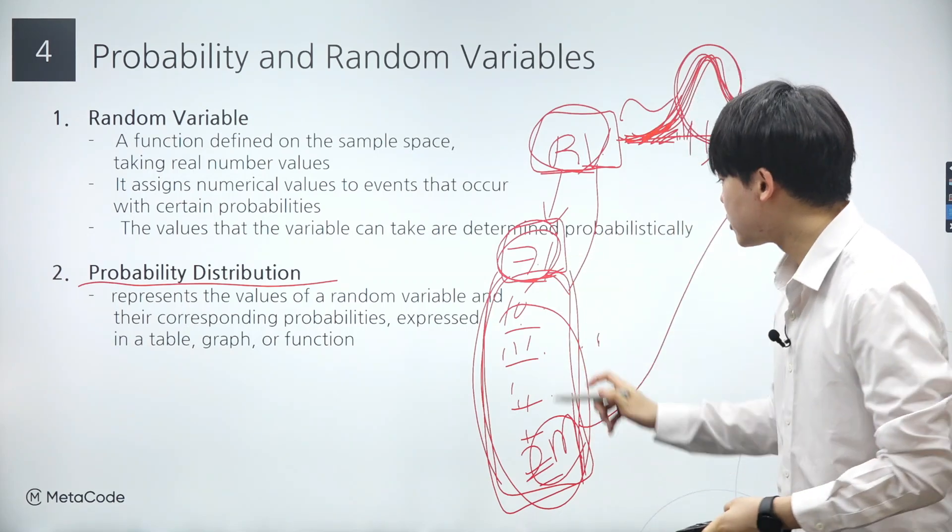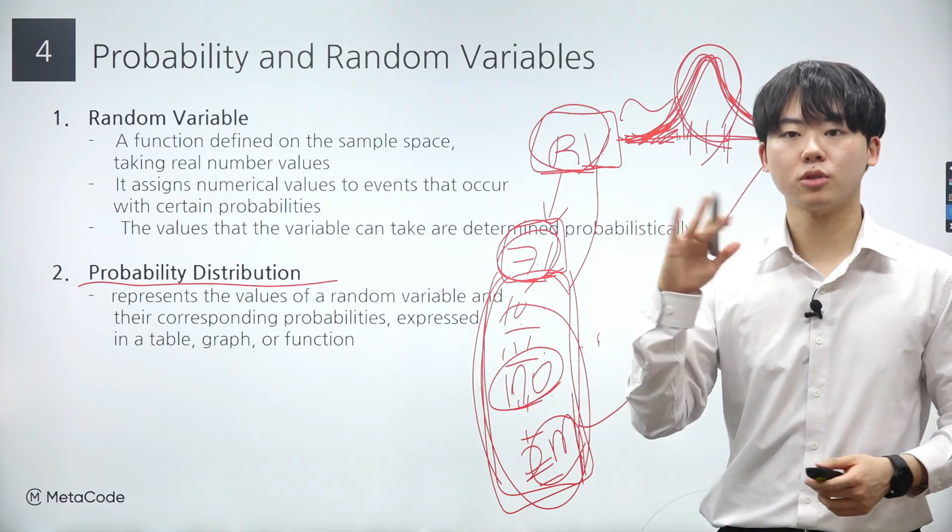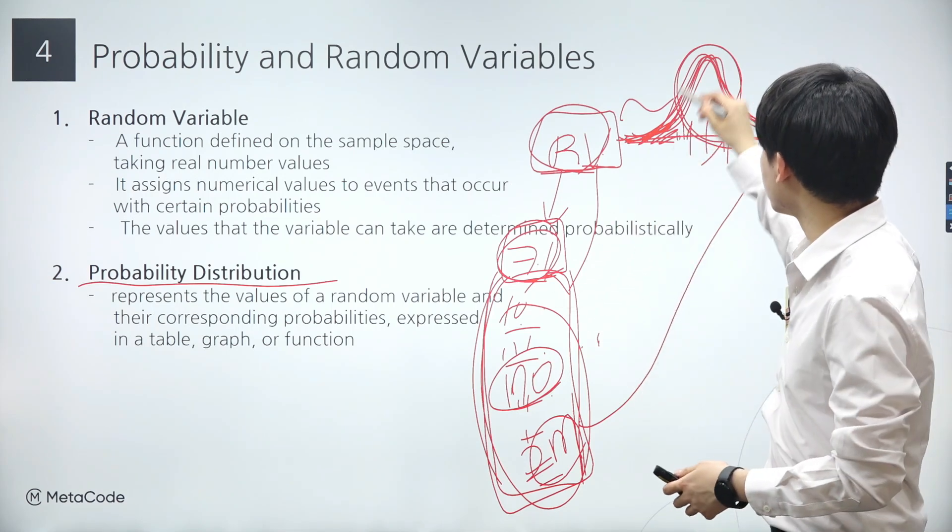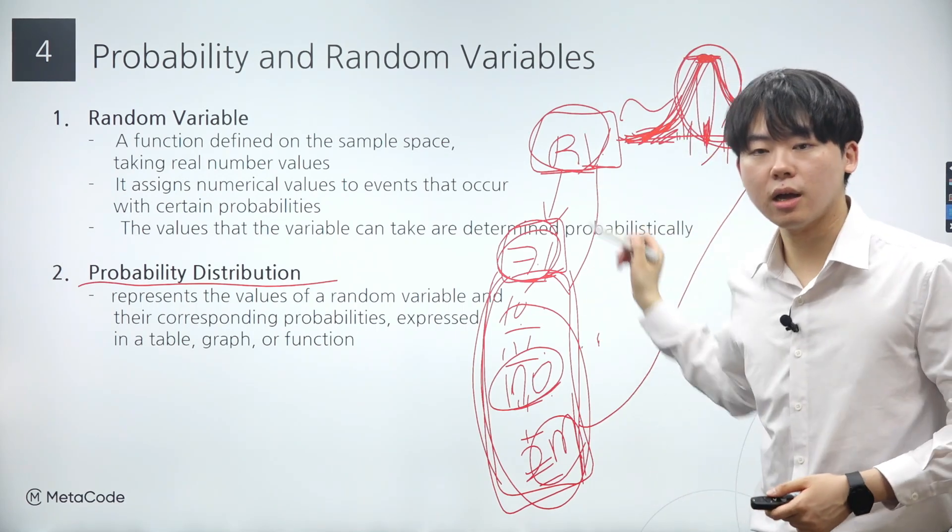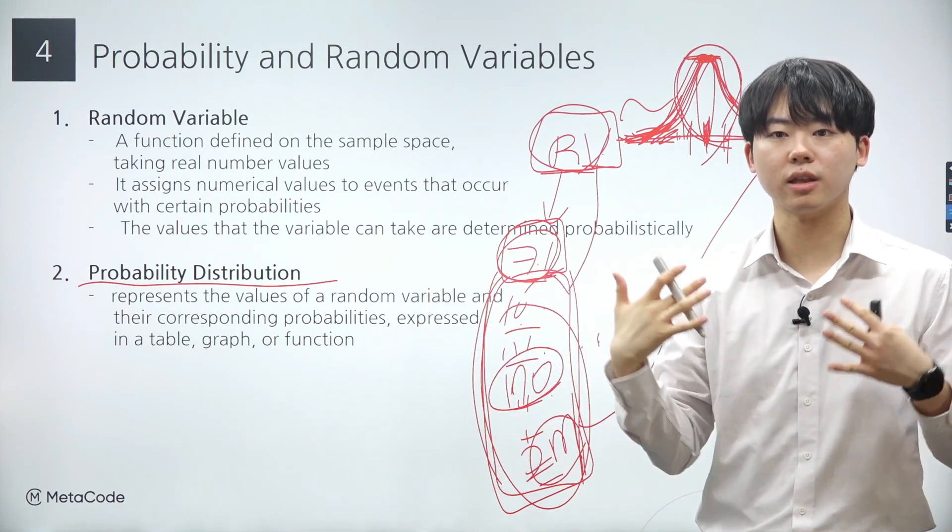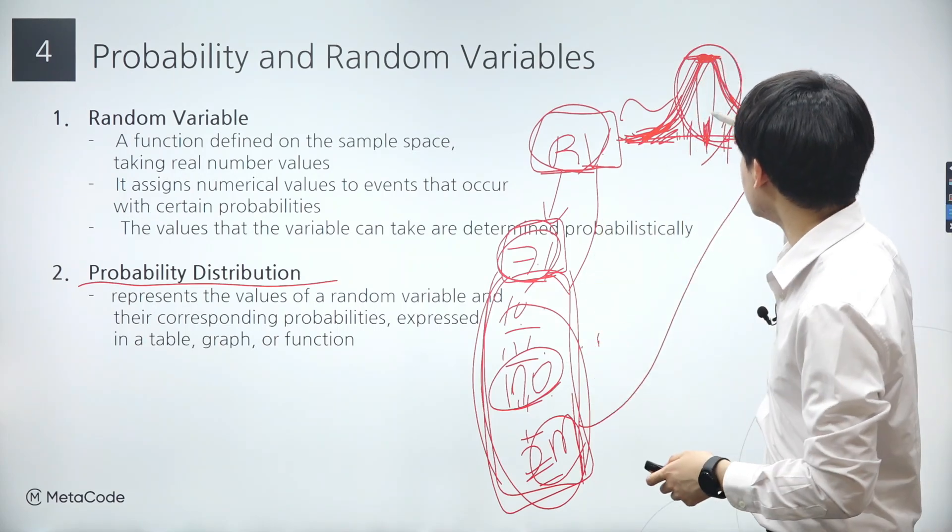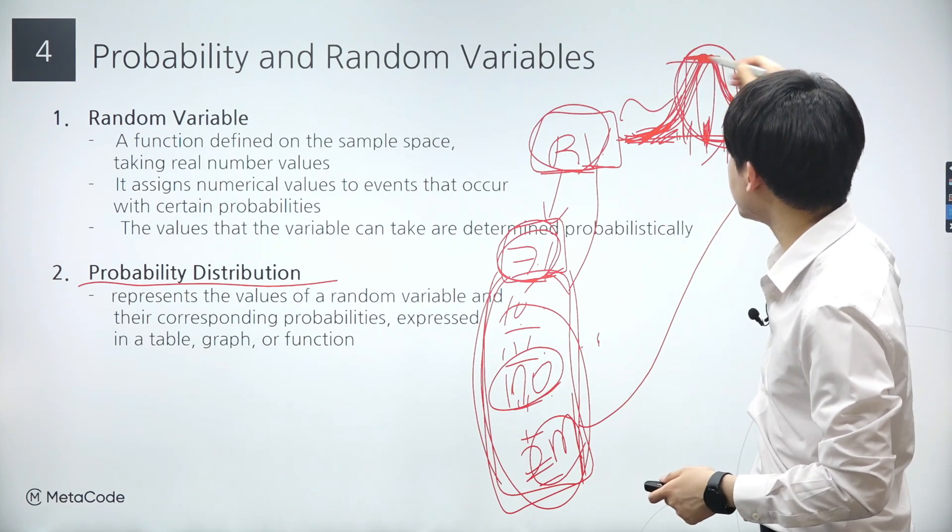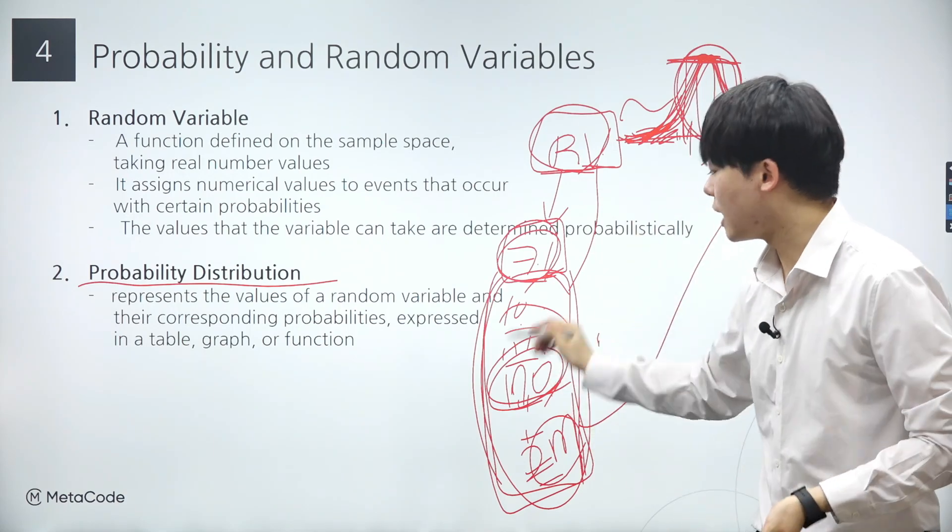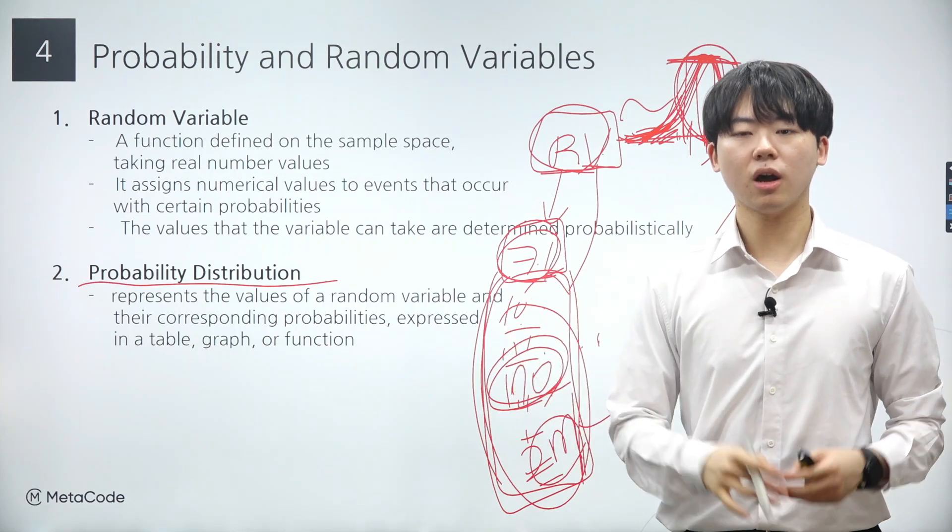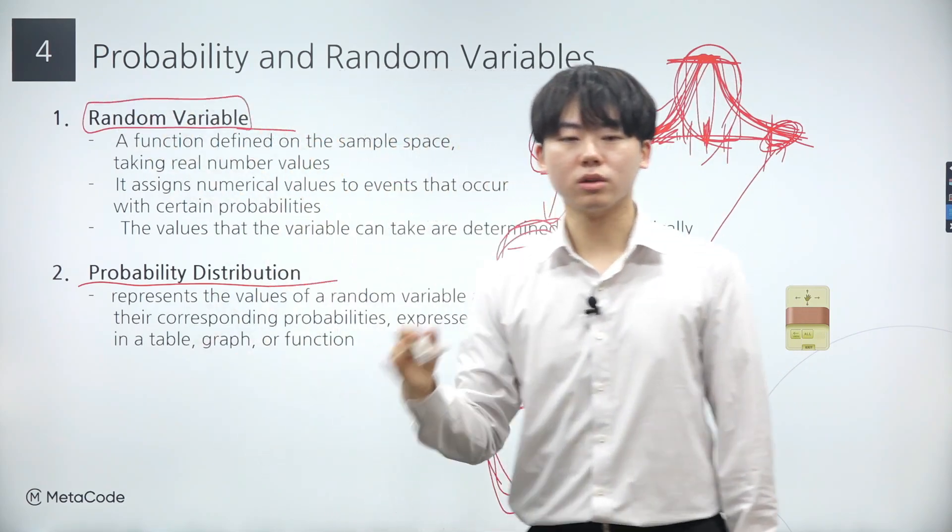From now on, whenever we acquire data, we'll adopt the perspective of treating it as a random variable. For example, let's consider data points such as 170 centimeters. If 170 centimeters is close to the average height, it's likely to be located near the peak of the distribution. Consequently, we expect numerous data points clustered around 170 centimeters within the dataset. This phenomenon illustrates a fundamental principle. The reason we observe more data points close to 170 centimeters compared to those near 2 meters is due to the underlying probability distribution associated with the random variable. This distribution assigns higher probabilities to values around 170 centimeters, thereby resulting in a greater concentration of data points in this area.